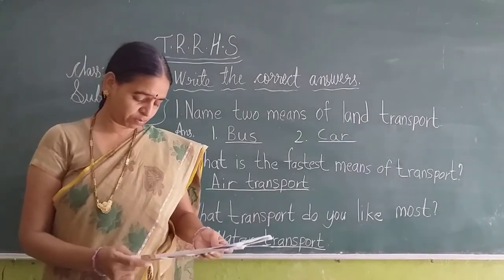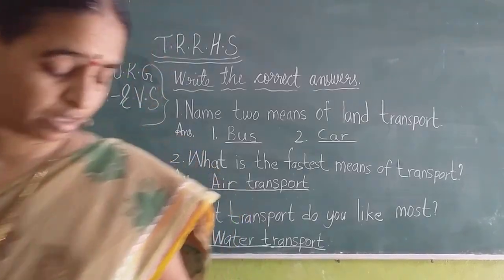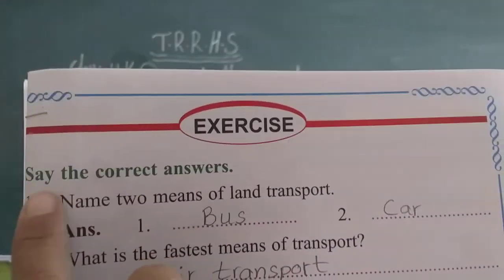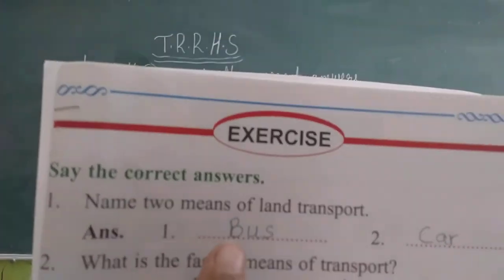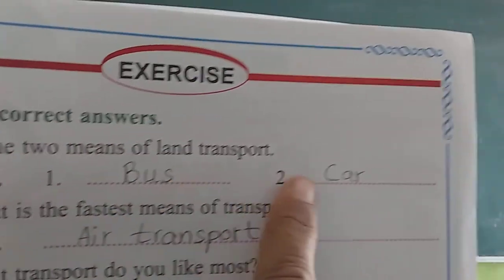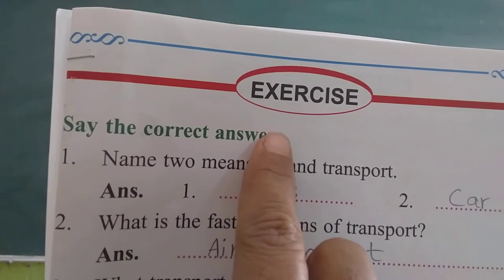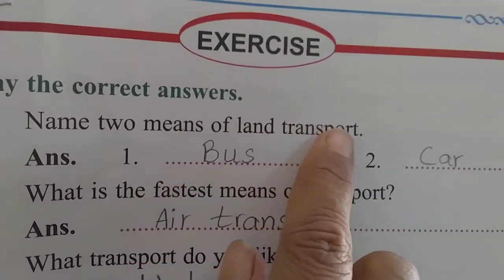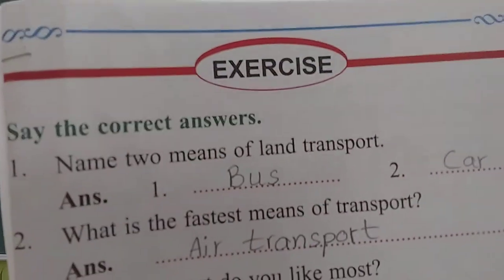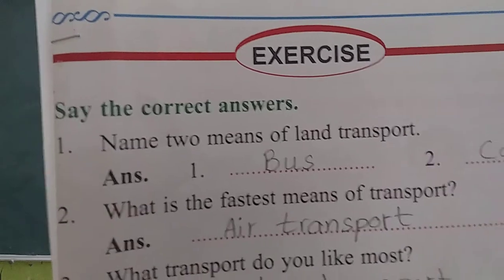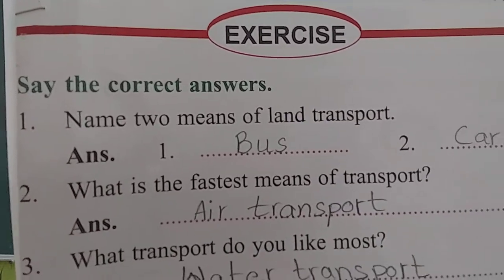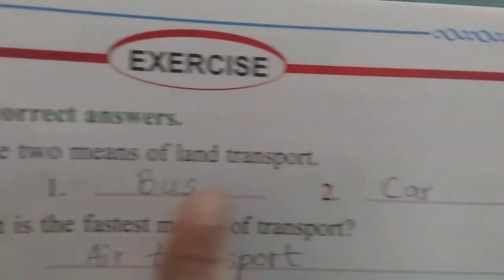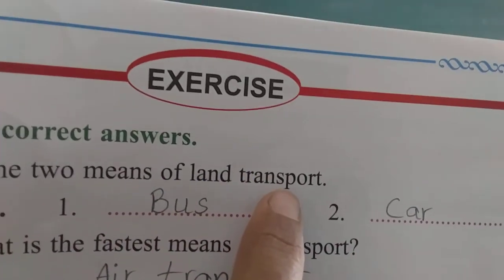Now I will show you the workbook page number 29. Please look at the book and take out your books. Fill in the blanks with the correct answers. Name two means of land transport: bus and car. These two are means of land transport.